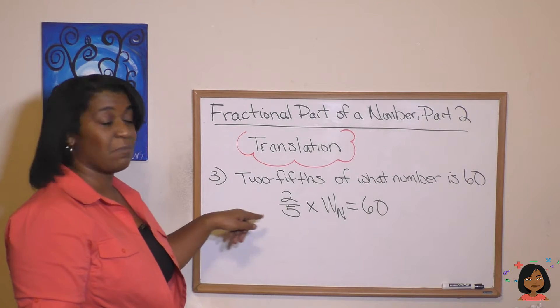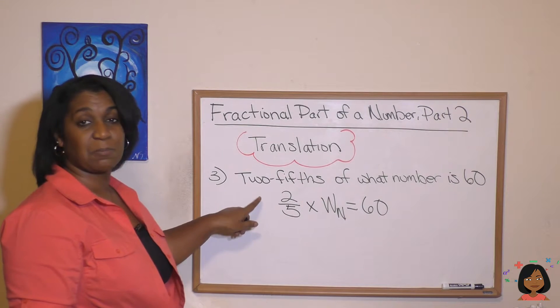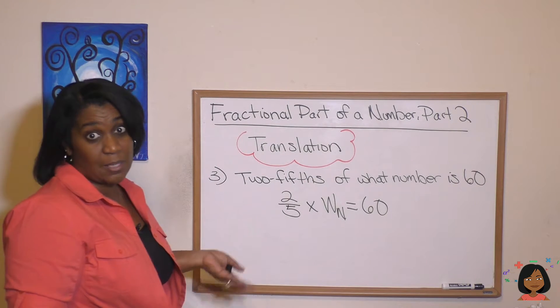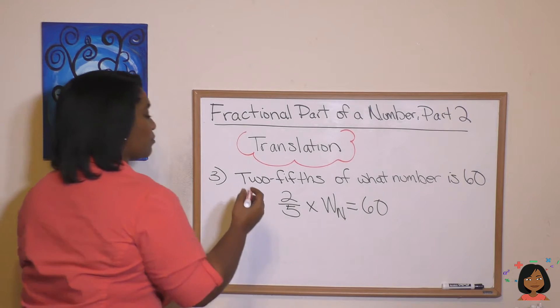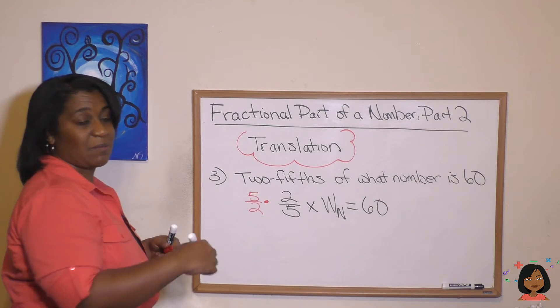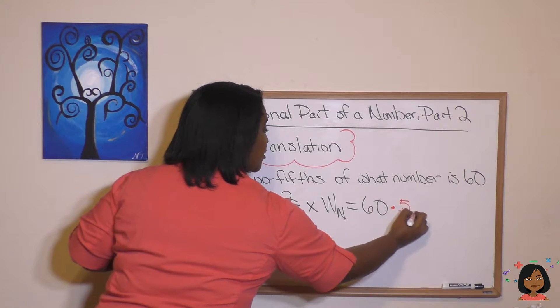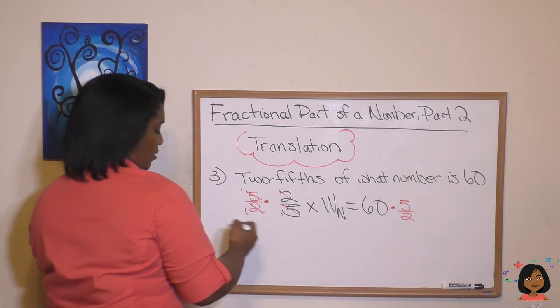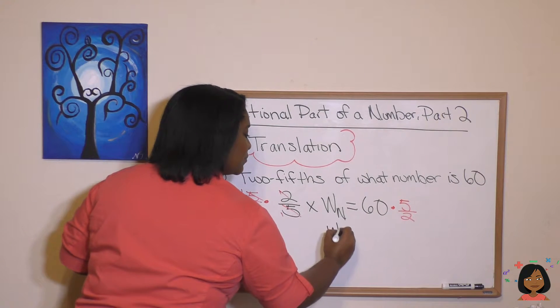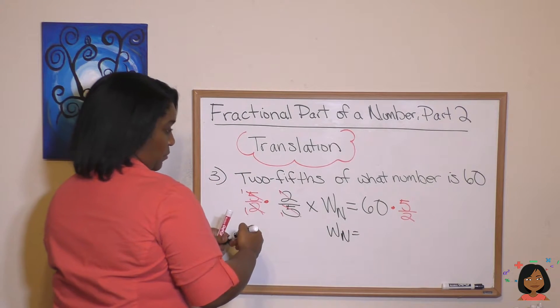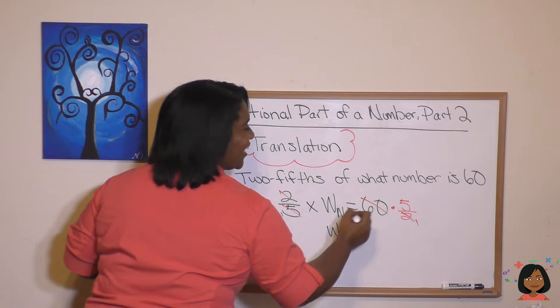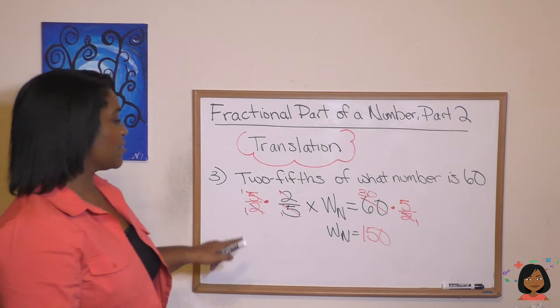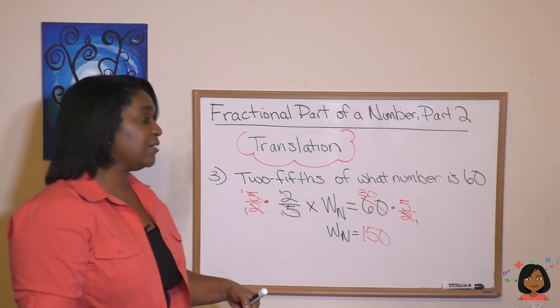So this is a missing number in multiplication. To get to our missing number, we have to multiply both sides of the equation by the reciprocal, which is the same thing as dividing by two fifths, multiplying by the reciprocal. So I'm going to multiply this side by five over two. I'm going to multiply this side by five over two. And what happens on this side? The five and the five cross out, the two and the two cross out, we are just left with what number. And on this side, the two and the 30 can cross out, which leaves two and the 60, which leaves me with 30. And then 30 times five is 150. So our answer: two fifths of 150 is 60.